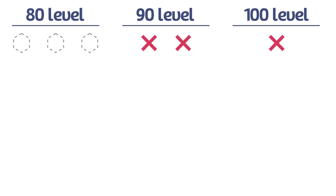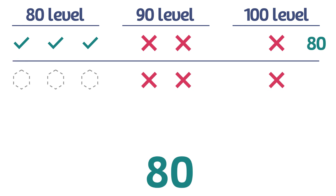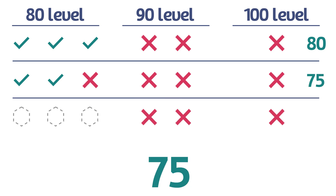Case 2: Students get all the 90 and 100-level questions wrong. If students get all three 80-level questions correct, they receive an 80. If students get two of the three 80-level questions correct, they receive a 75. And if students get one of the three 80-level questions correct, they receive a 70.